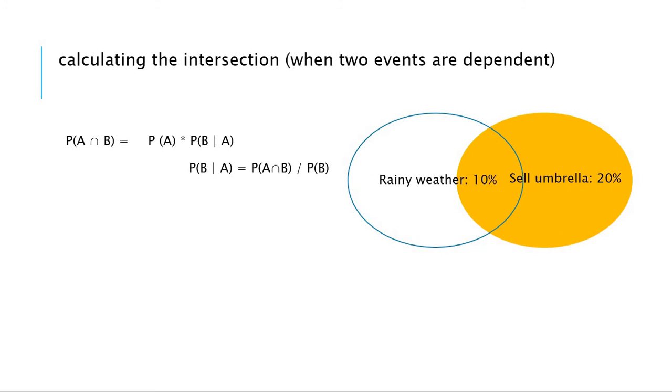Another case of conditional probability is when two events are dependent, like in rainy weather, the market can sell more umbrellas because people need them. So in this case, P of A and B we can denote as P of A multiplied by P of B given A.